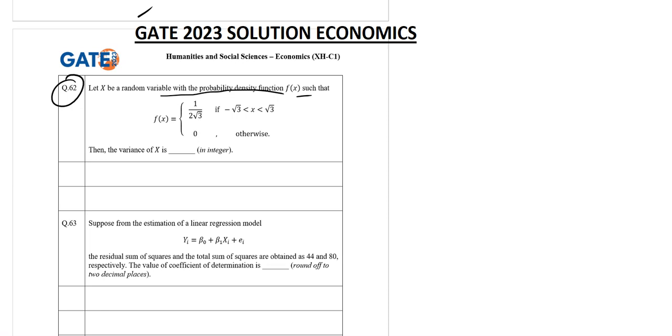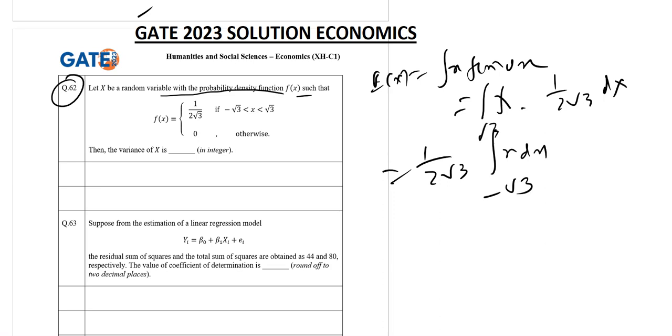So f(x) equals zero otherwise. For the expected value, we calculate the integration of x times f(x) dx. So integration of x times 1 by 2 root 3, dx from minus root 3 to plus root 3.